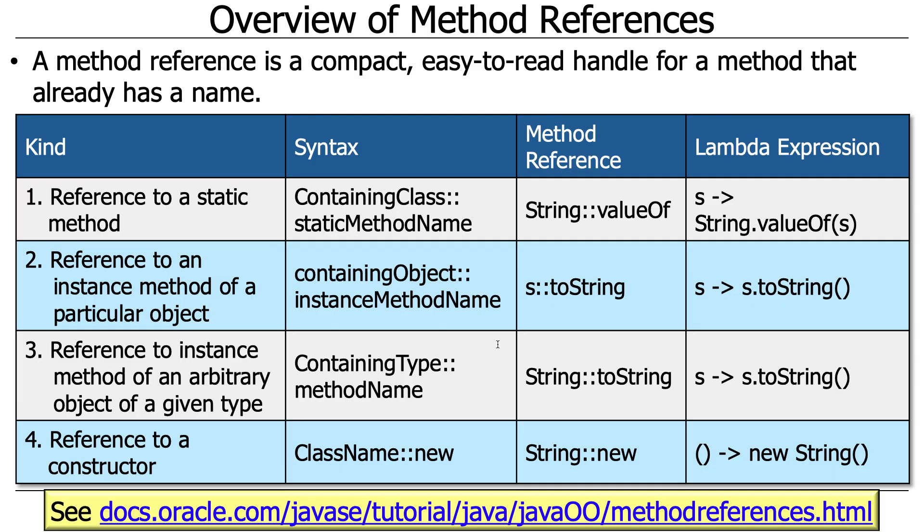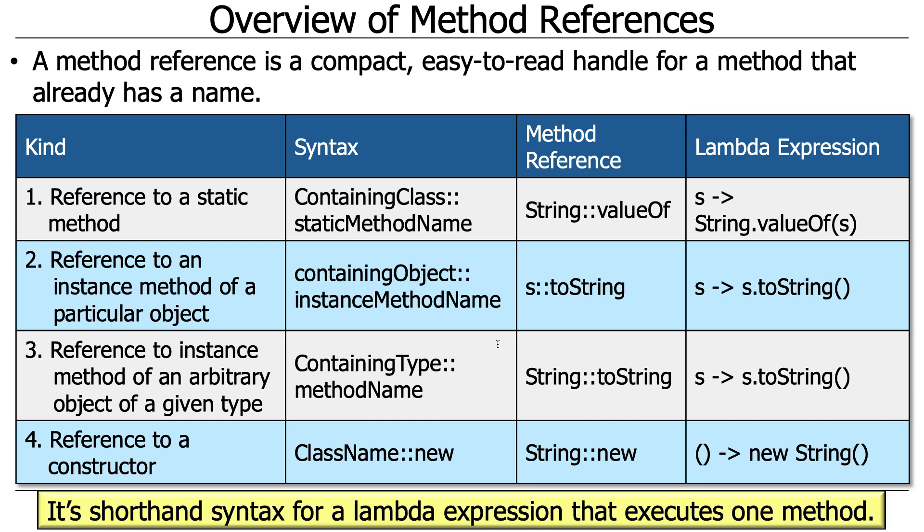So what is a method reference? A method reference is a very compact, easy-to-read handle for a method that already has a name. Remember, a lambda expression didn't have a name, whereas a method reference has a name. It's basically shorthand syntax for a lambda expression that executes a single method.